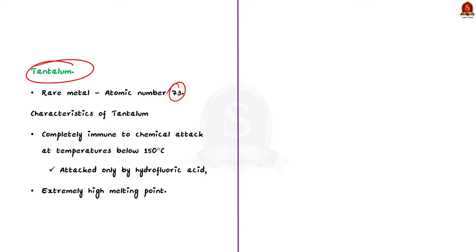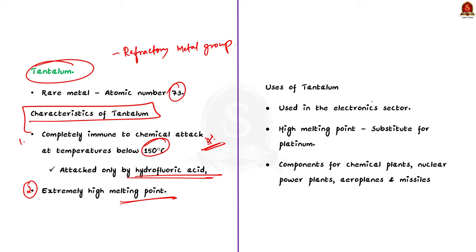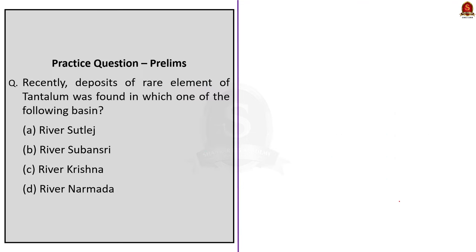An important property of tantalum is that it is completely immune to chemical attacks at temperatures below 150°C and can be attacked only by hydrofluoric acid. Tantalum also has a high melting point exceeded only by tungsten and rhenium. Uses of tantalum: mostly used in the electronics sector as capacitors made from tantalum can store more electricity even in smaller sizes compared to other types. Due to its high melting point, tantalum is used as a substitute for platinum. It is also used in components for chemical plants, nuclear plants, aeroplanes and missiles.